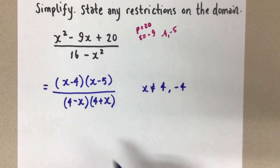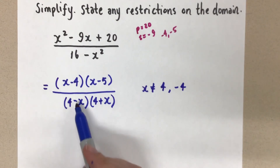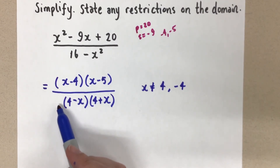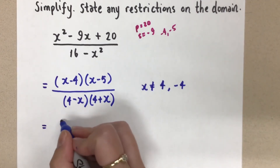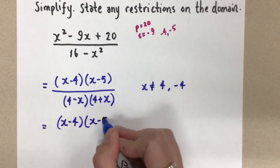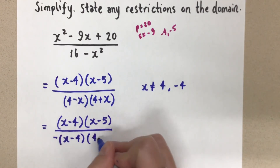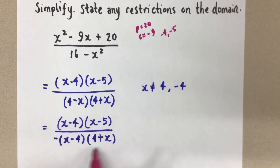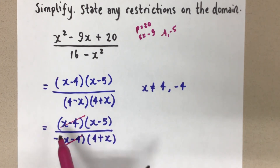Now let's go back to the simplifying. In the numerator I have an (x minus 4) factor and in the denominator I have (4 minus x). Those are not exactly the same, but we can manipulate this. If I take the (4 minus x) factor and factor out a negative 1, I get negative (x minus 4), or equivalently (x minus 4) with a negative out front. So the numerator stays the same, and in the denominator I change (4 minus x) to negative (x minus 4), keeping the (4 plus x) factor.